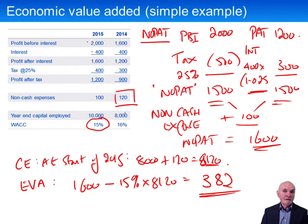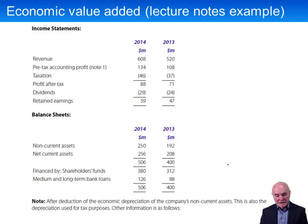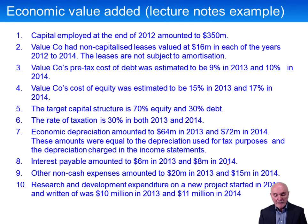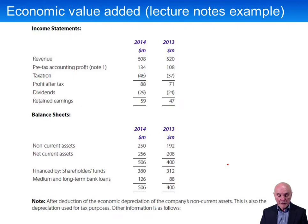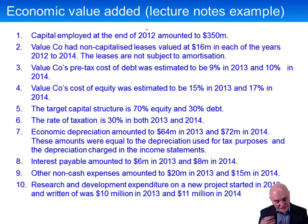Now, it was a simple example — you're unlikely to get anything as simple as that in the exam. Let's look at a fairly comprehensive example; you're also unlikely to get anything more complicated than this in your exam. This is the example which is in your study notes. We have the income statement, the balance sheets, and a great list of notes. This time we want to work out the economic value added for both 2013 and 2014. We can do that because we have capital employed at the end of 2012, which will be the capital employed at the beginning of 2013.